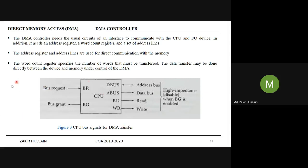Here the DMA is requesting bus control — that is the memory bus control — and sends a bus request to the CPU. The CPU grants that permission through a signal called bus grant. The moment bus grant is enabled by the CPU, all those signals — address bus, data bus, read, write — are disabled. This is because CPU must lose control of the memory bus.